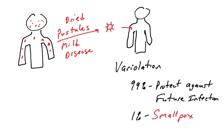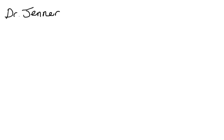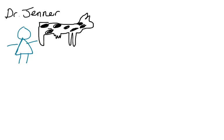Variolation was still better than nature, but it turns out there's an even better way, figured out by one man named Edward Jenner, an English country doctor. He made an observation about milkmaids and cows: milkmaids never had all the smallpox scars that were common on other people's bodies.